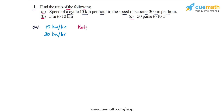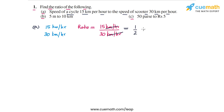The ratio will be 15 kilometers per hour by 30 kilometers per hour. Because these two are in the same units, the units cancel, and we have 15 by 30, or 1 by 2. We can write this as 1 is to 2. So this is the answer for part A — the ratio is 1 is to 2.